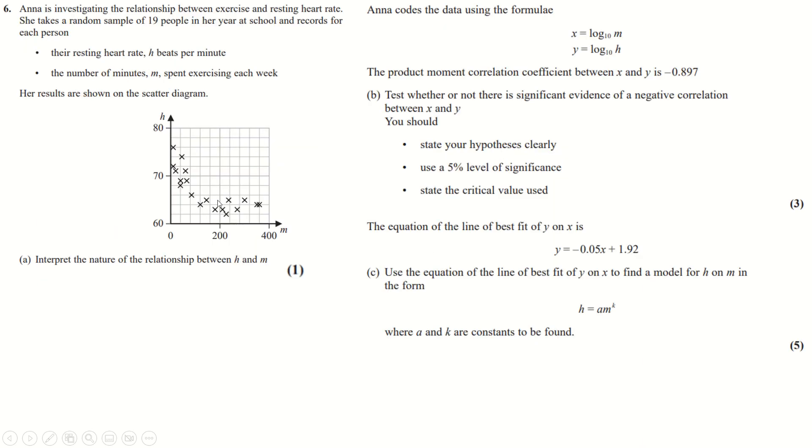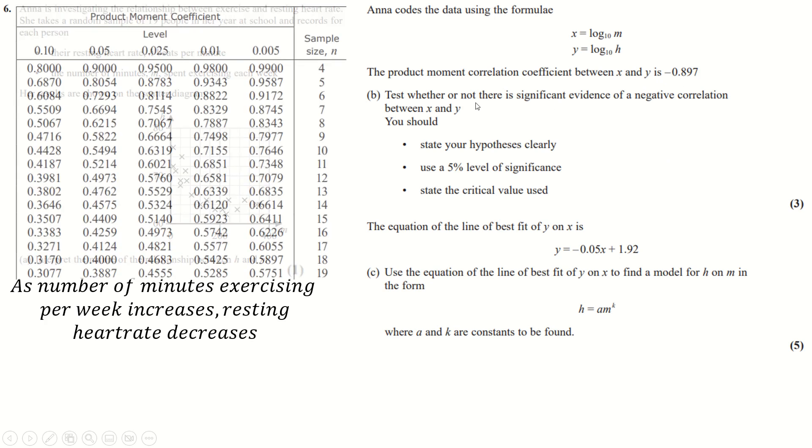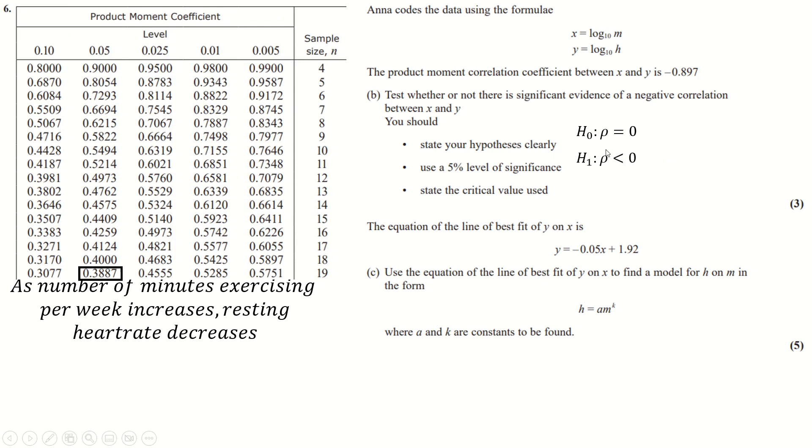Last question then. This is absolutely ridiculous. Interpret the nature, so M is the number of minutes of exercising each week. As you spend more time each week exercising your resting heart rate goes down is what you have to write apparently. Product moment coefficient is this.